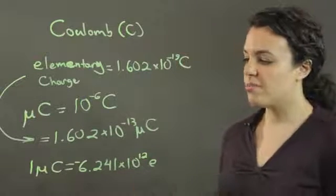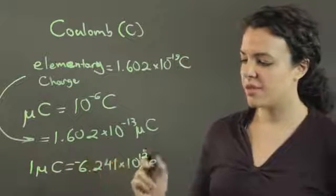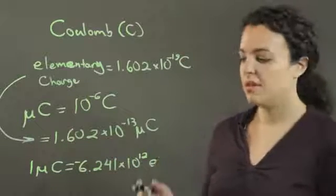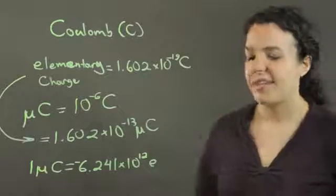So, for every microcoulomb you have, you'll get negative 6.241 times 10 to the 12th electric charge. Thank you for watching.